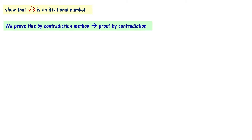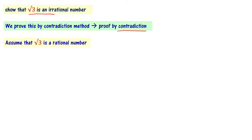We show that root 3 is an irrational number. We prove this by contradiction method — that's why this is called proof by contradiction. Let's assume that root 3 is a rational number.